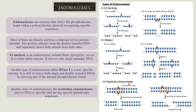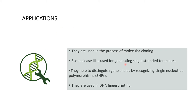Restriction endonucleases cleave the DNA at specific palindromic sequences. Palindromic sequence means if you read the sequence from 3' to 5' or from 5' to 3', they have the same nucleotide base sequence. For example, like the word 'Malayalam' — the alphabets read from right to left are the same as left to right. Similarly, the nucleotide sequence read from both sides is the same, and this is called a palindromic sequence.